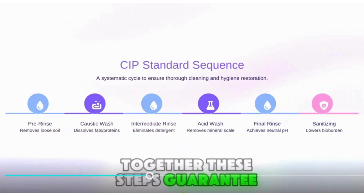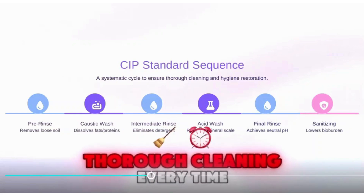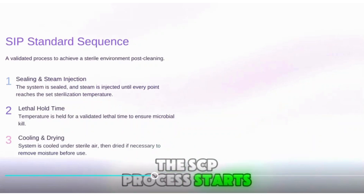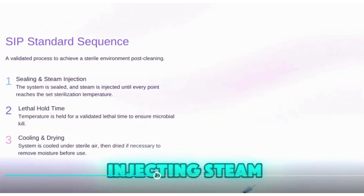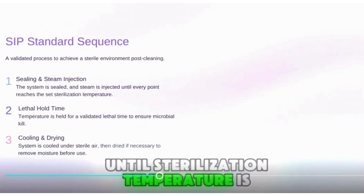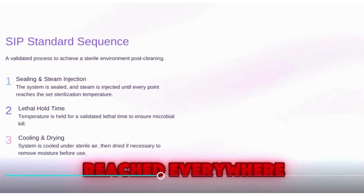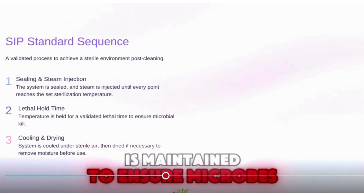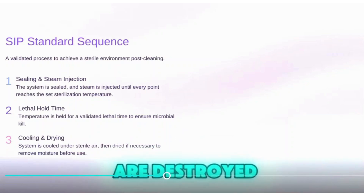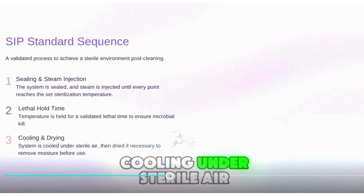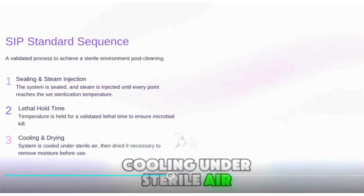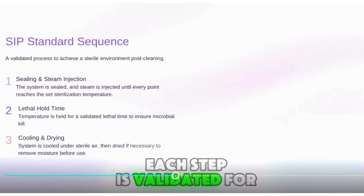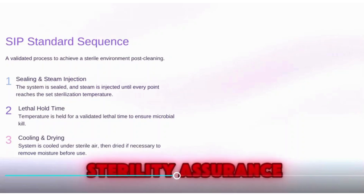Together, these steps guarantee thorough cleaning every time. The SIP process starts by sealing the system and injecting steam until sterilization temperature is reached everywhere. Then the lethal hold time is maintained to ensure microbes are destroyed. Afterward, cooling under sterile air and drying prepare the system for safe use. Each step is validated for sterility assurance.